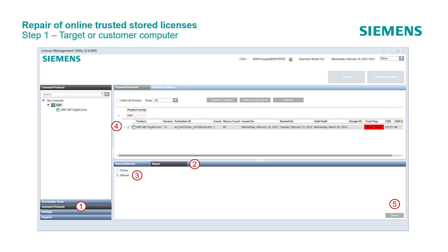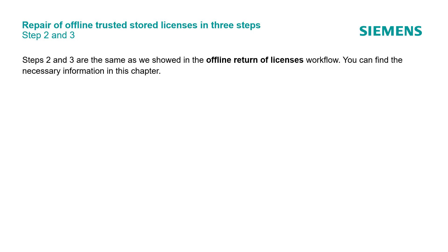From now on, the workflow is the same as for returning. In the dialog box, define a name for the request file, select a location, and save the file. Make sure that the request file will be available at the engineering machine. Steps 2 and 3 are the same as shown in the offline return of licenses workflow. You can find the necessary information in that chapter.